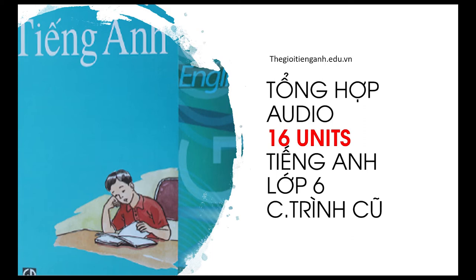Section B: Town or Country? Listen and read. My name's Ba. I live in an apartment in town. Near the apartment there is a supermarket, a post office, a bank, a clinic, a market, and a zoo. It's very noisy here. My name's Chi. I live in a house in the country. There aren't any stores here. There are trees and flowers, a river, a lake, and paddy fields. It is very quiet.